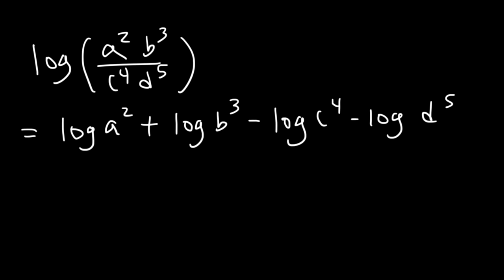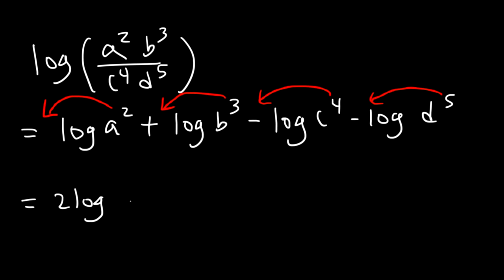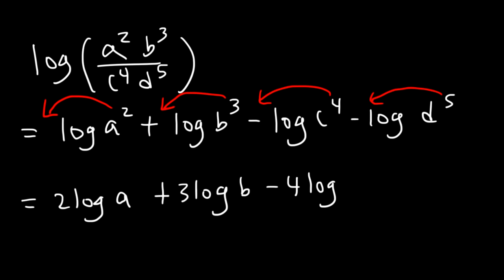Next, we need to move the exponents to the front, and that's the last thing we need to do. So the final answer is 2 log a plus 3 log b minus 4 log c minus 5 log d.